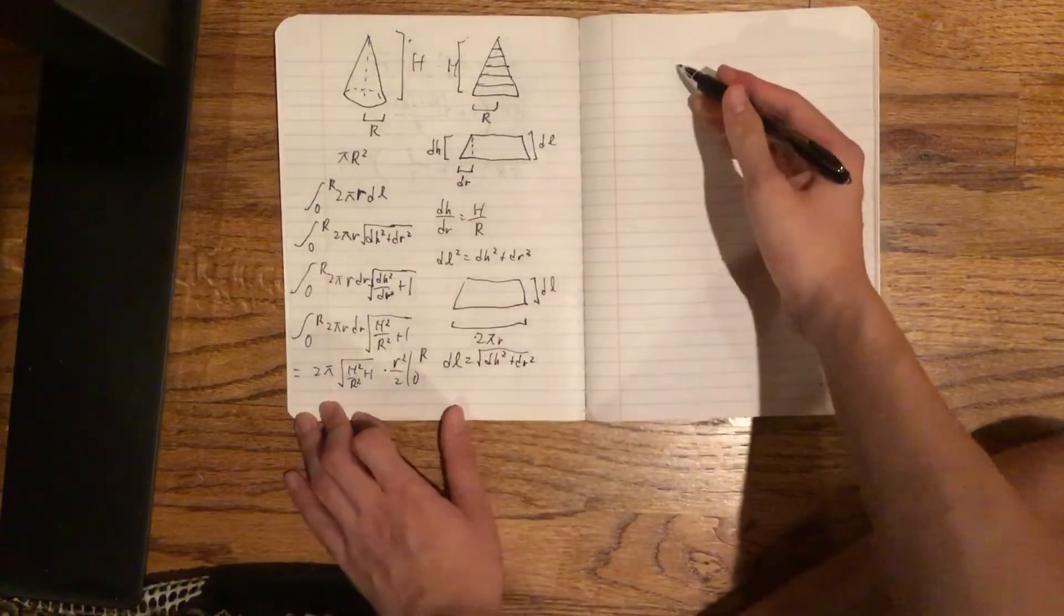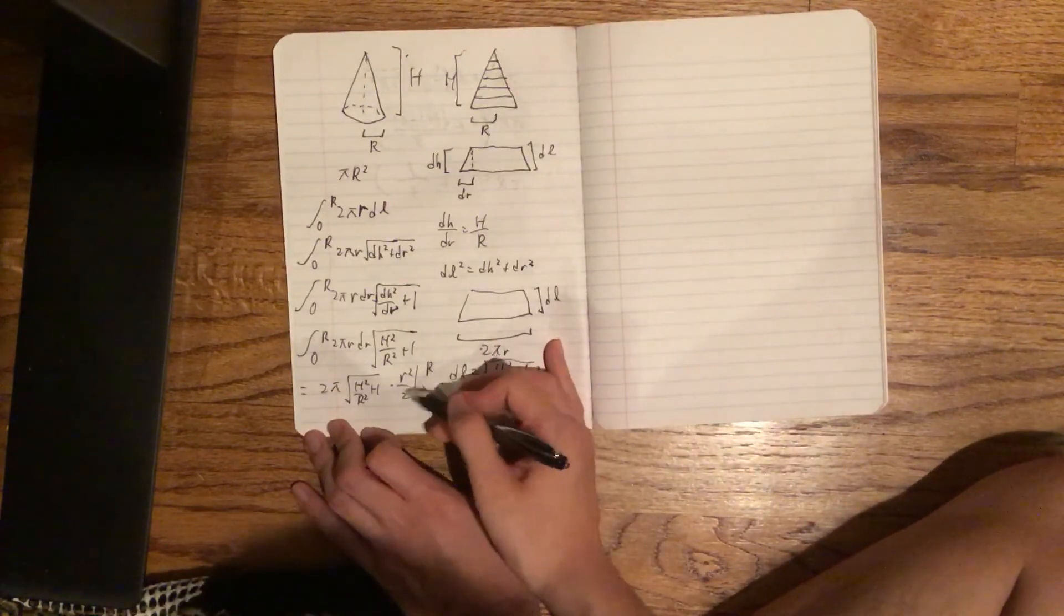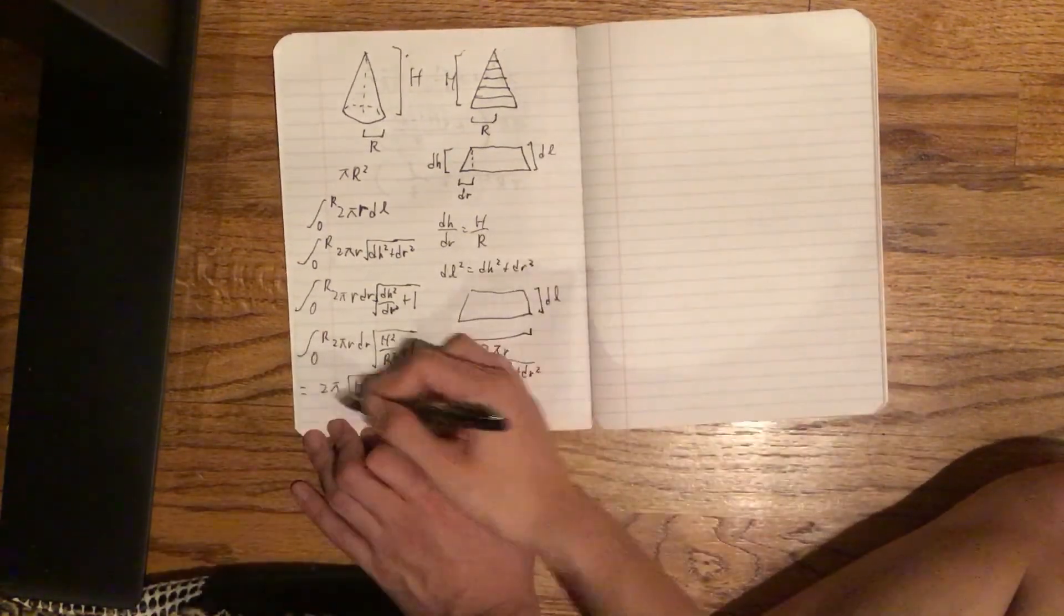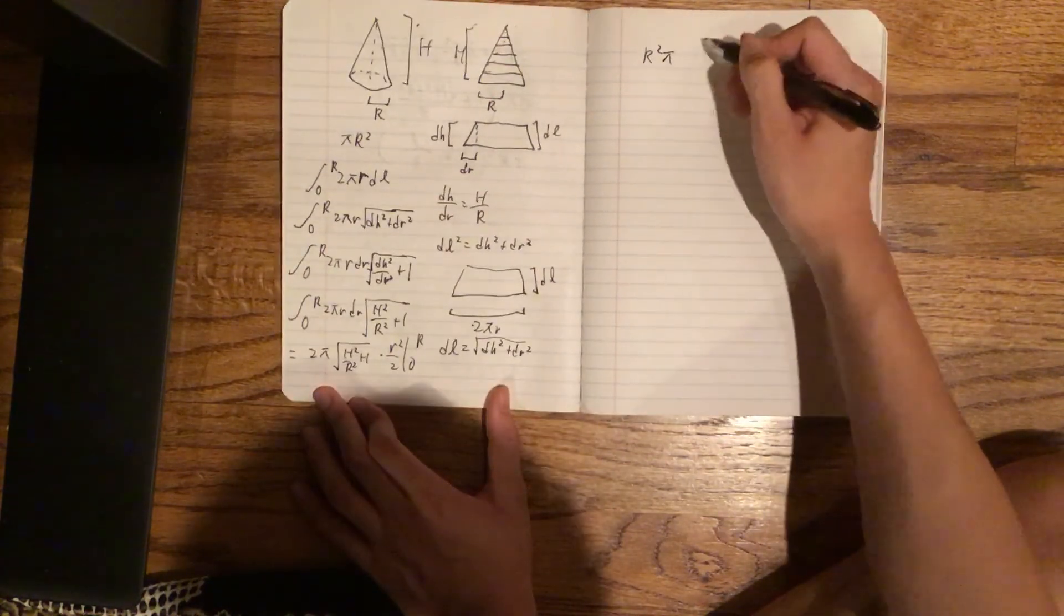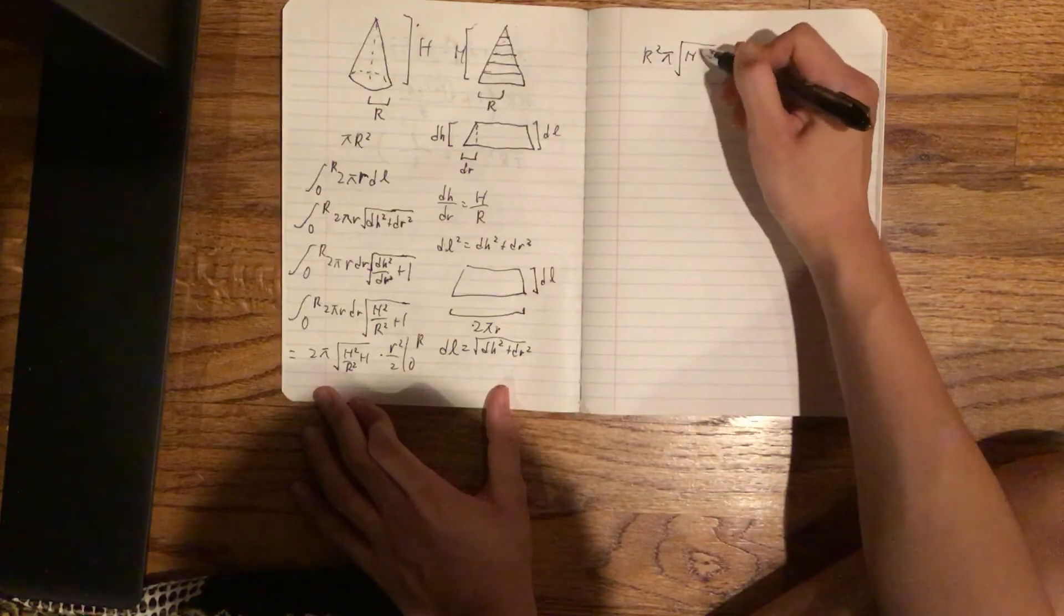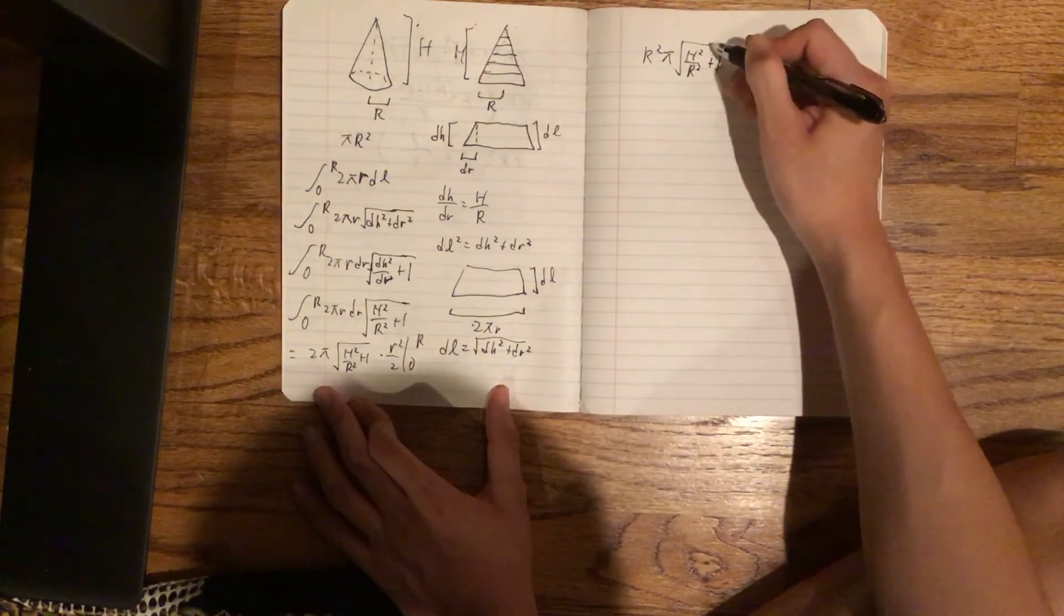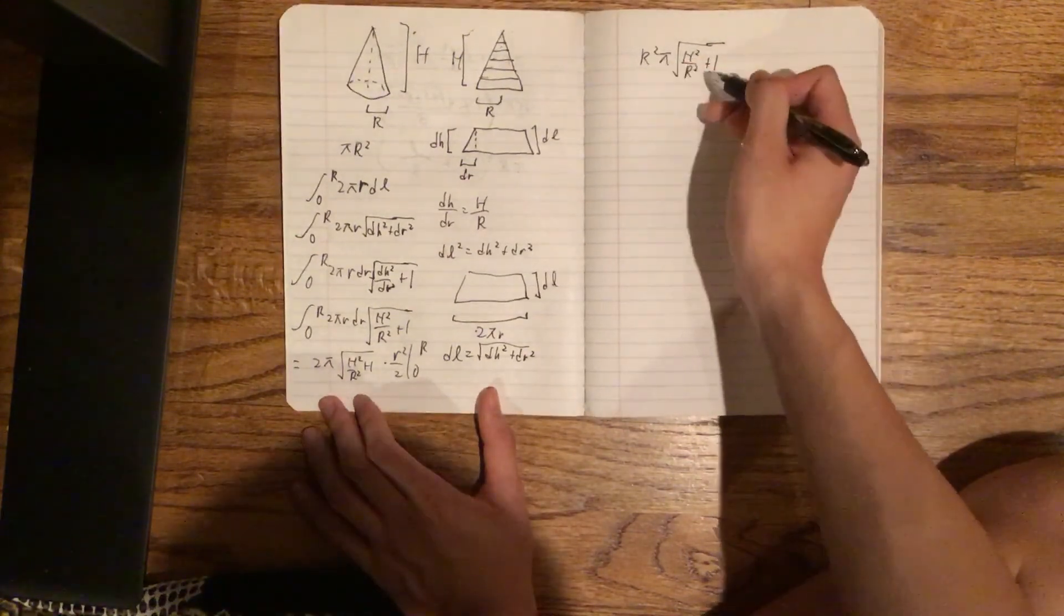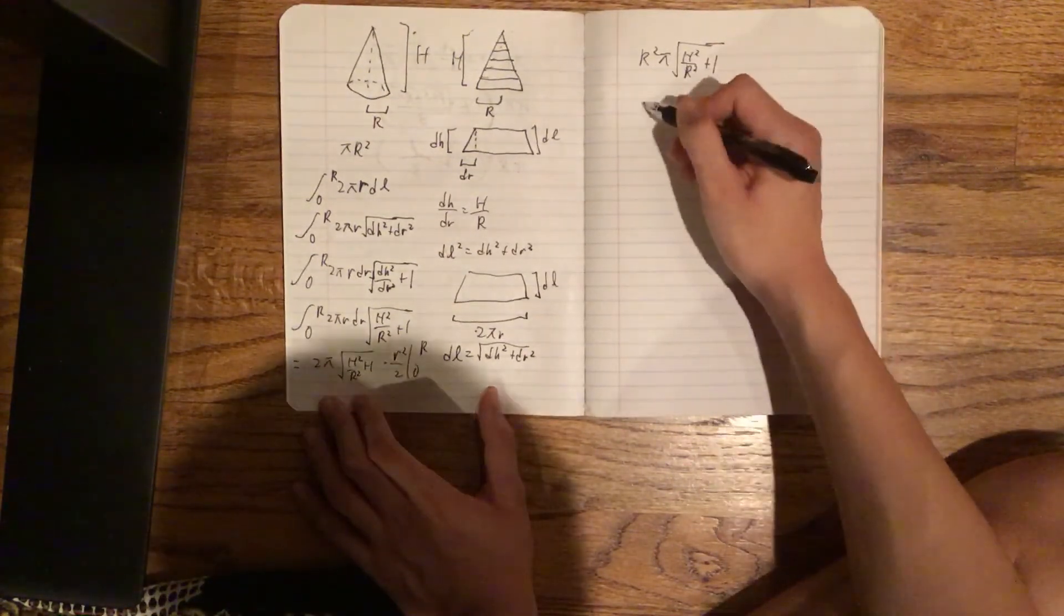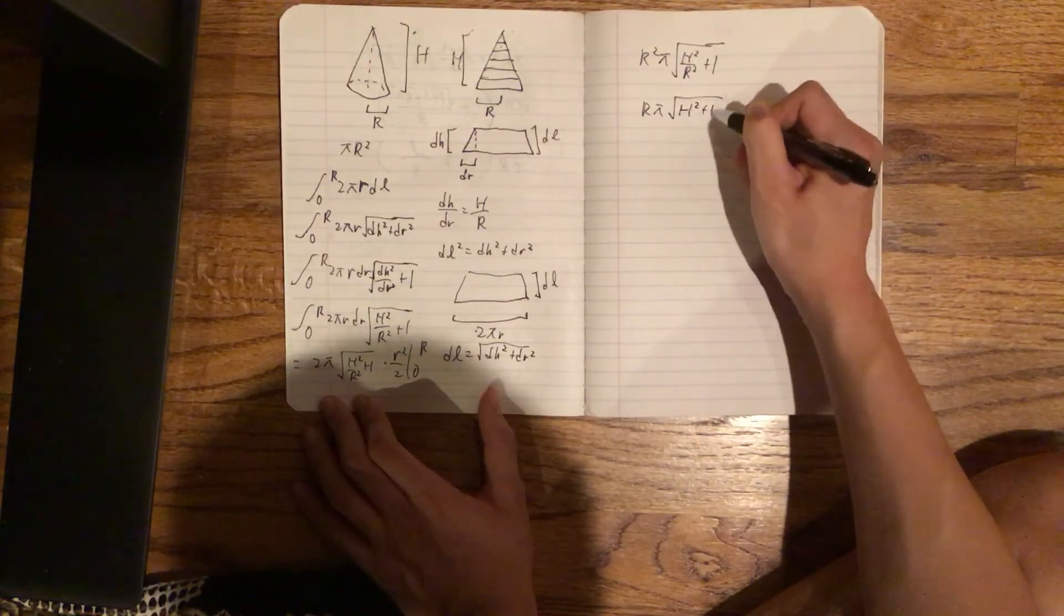So 0 wouldn't do anything. So we only care about this r. And these 2s will cancel out. So we get r²π√(h²/r² + 1). And we can take an r and just put it in here to get rπ√(h² + r²).